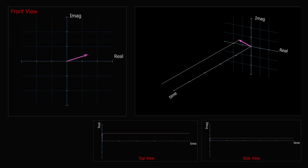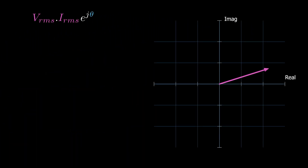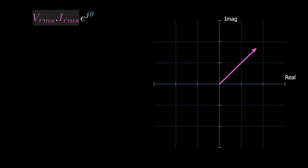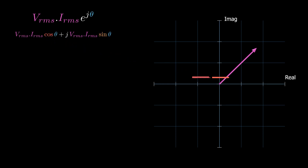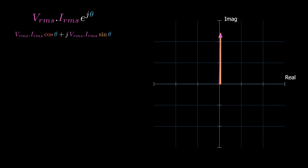Now you have the whole picture in 3D. What you will see in textbooks is only the front view of the average complex power — a complex number or vector with magnitude equal to the product of the voltage and current RMS values, rotated some angle theta. The magnitude is called apparent power. That vector has real and imaginary parts representing active and reactive power respectively. The apparent power equals the active power when the phase angle is zero, and equals the reactive power when the phase angle is 90 degrees positive or negative.